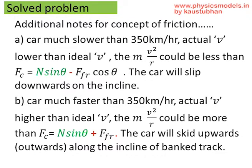Similarly, the story for the car going more than 350 kilometers per hour. So a car that is slower than 350, the actual v is lower than the ideal v. And the m v squared by r could be less than N sin theta minus force of friction times cos theta.